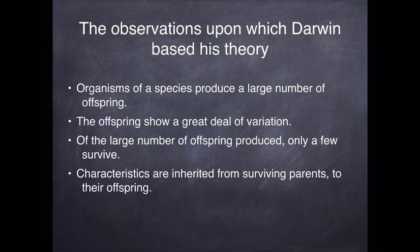Firstly, organisms produce a large number of offspring. Those offspring already show a great deal of variation. And of the large number of offspring that are produced, very few survive to adulthood and to reproduce themselves. What he also noticed is that characteristics are inherited from parents that survive. So if you survive and reproduce, you will pass on your characteristics to your offspring. Those four observations are essentially what underpin the theory of natural selection.